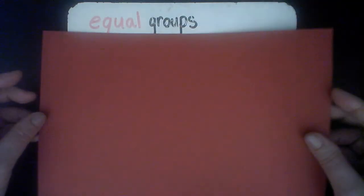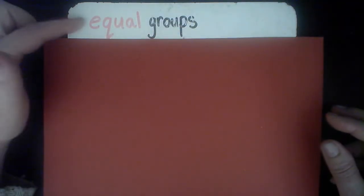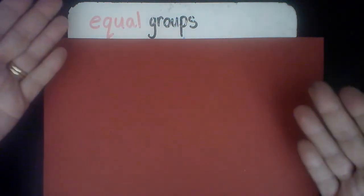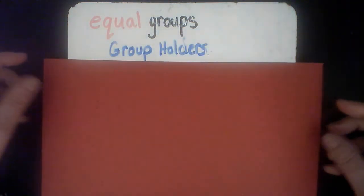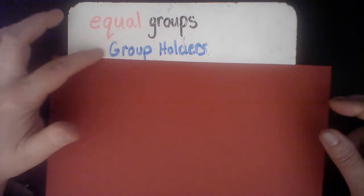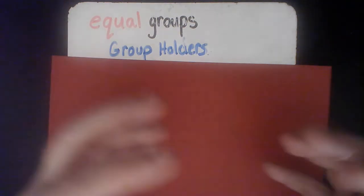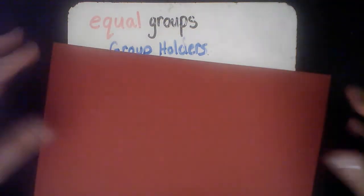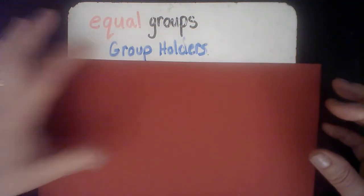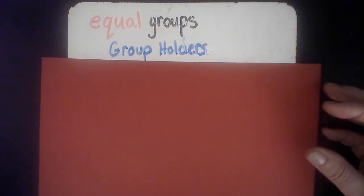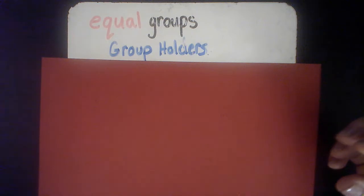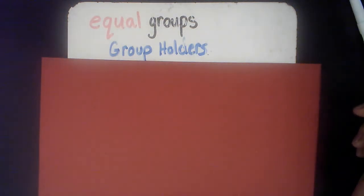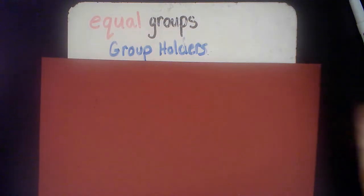There are a few things we need to think about when we're making up a story problem for multiplication. The first thing is we need to remember that multiplication is equal groups. So whatever goes into my story problem is going to be about groups that have the same number of things in them. The next thing to think about is our group holders — what is going to be holding the objects? For example, ice cream cones could be the holders of scoops, so the cone would be your group and the scoops of ice cream would be the objects in your group. It could be boxes or bags of something.